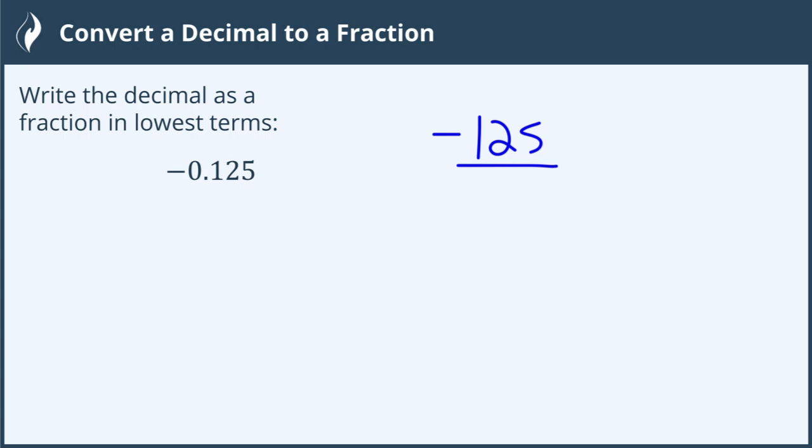In this case, I'm going to say, this is tenths, hundredths, thousandths. So that means I can write my fraction as 125 over 1,000 because 125 thousandths really means 125 divided by 1,000.